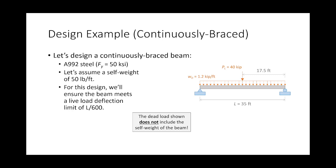The best way to go through steel beam design is to do an example. We have a simply supported beam with a dead load of 1.2 kips per foot and a live load of 40 kips at mid-span. We're going to design a continuously braced beam using 50 KSI steel, assuming a self-weight of 50 pounds per foot, with a live load deflection limit of L over 600.